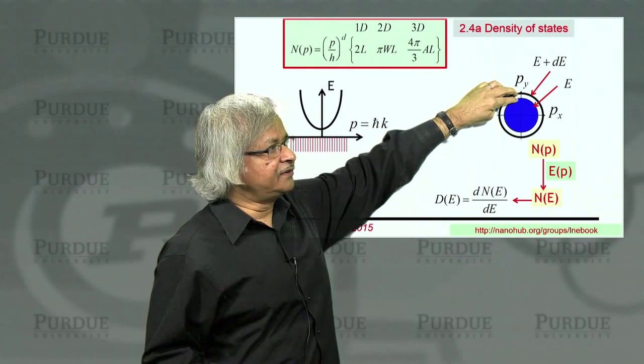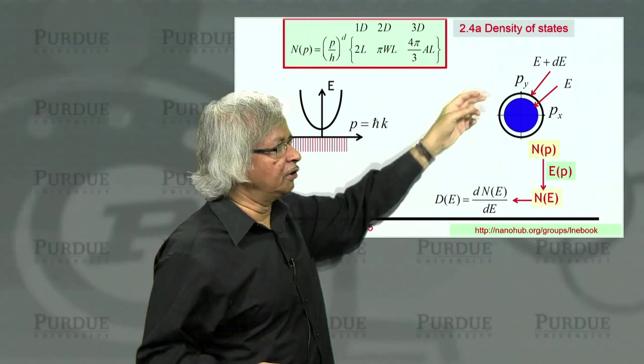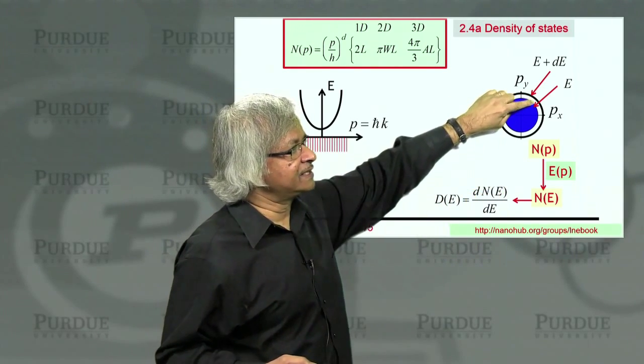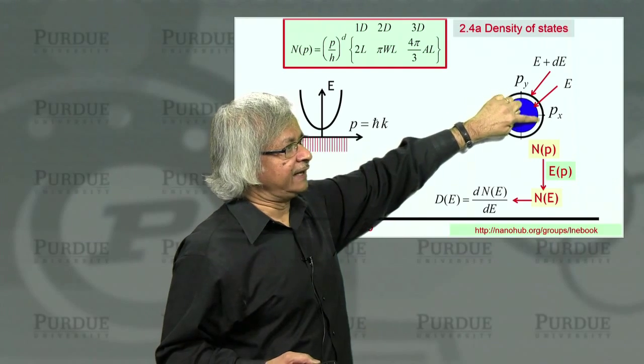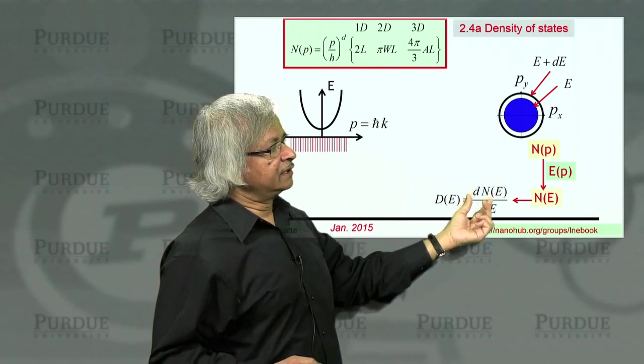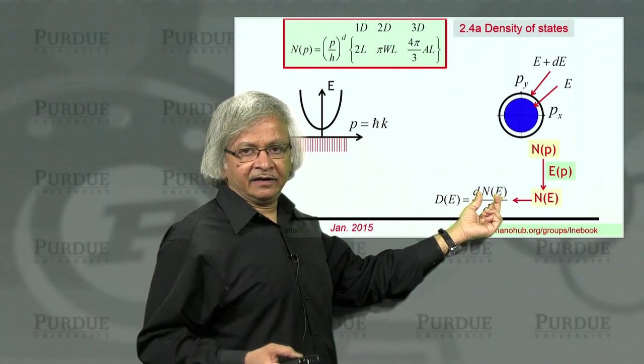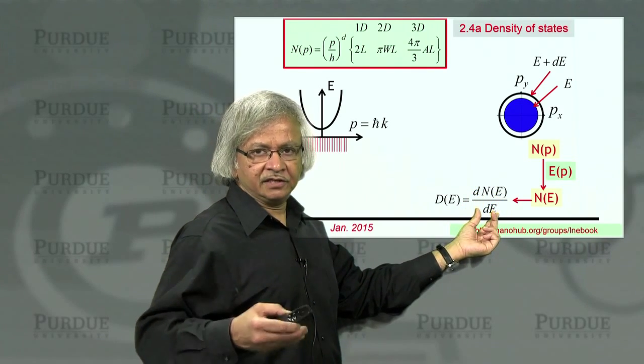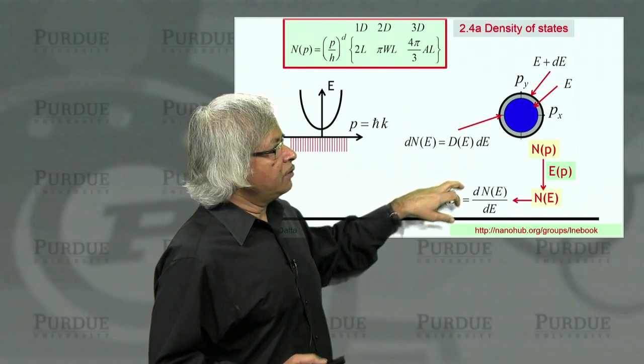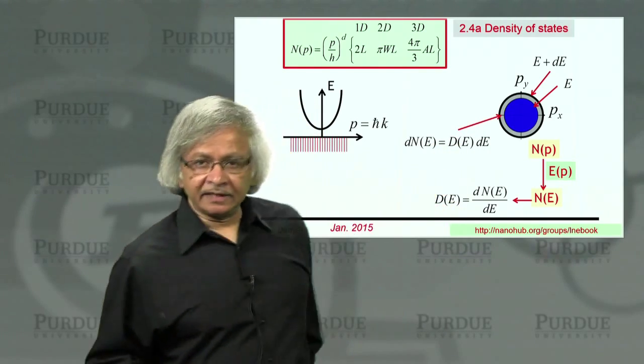When we go from E to E plus dE, there is an increased number of states available. What we want to know is how much it increased, because that's what represents the density of states at that energy. So density of states is given by the increase in N for a given increase in E.